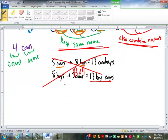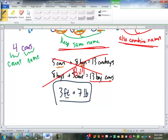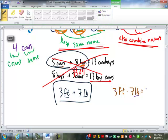So if I have something like three feet plus seven pounds, what do I get? That's a trick question. I get three feet and seven pounds. I can't combine those. Five cows and eight boys are five cows and eight boys. But when I multiply three feet times seven pounds, it's very different. I combine the counts. Three times seven is 21. But when I multiply, I also combine the names. Feet times pounds is simply foot pounds, which is a unit of torque.